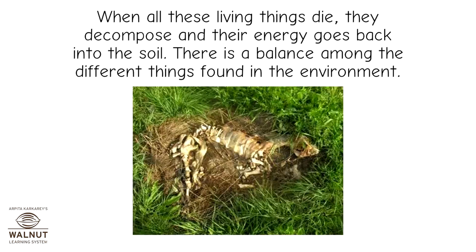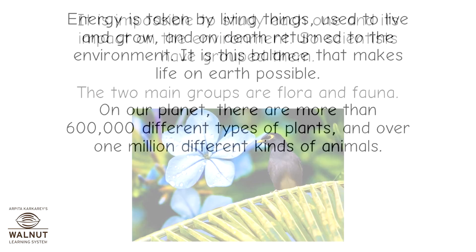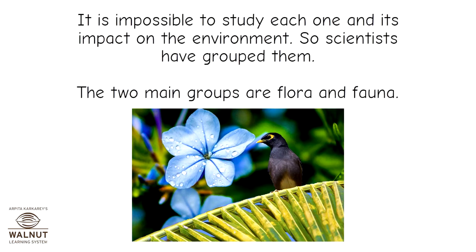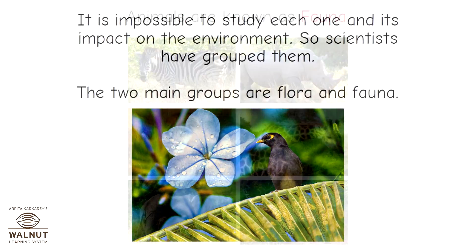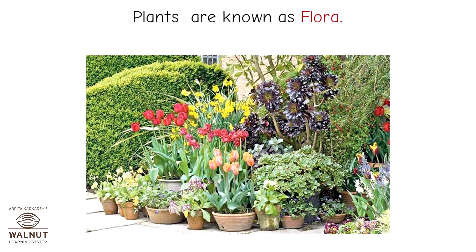There is a balance among the different things found in the environment. Energy is taken by living things, used to live and grow, and on death returned to the environment. It is this balance that makes life on earth possible. On our planet, there are more than 600,000 different types of plants and over 1 million different kinds of animals. It is impossible to study each one and its impact on the environment, so scientists have grouped them. The two main groups are flora and fauna. Animals are known as fauna, and plants are known as flora.